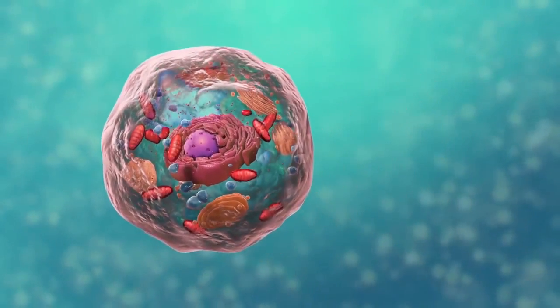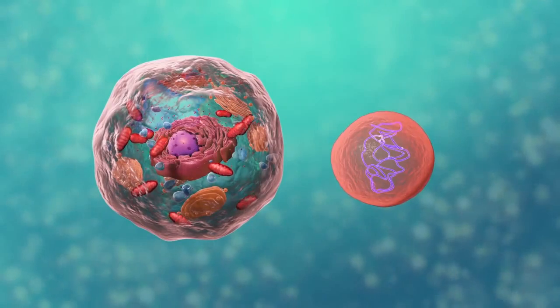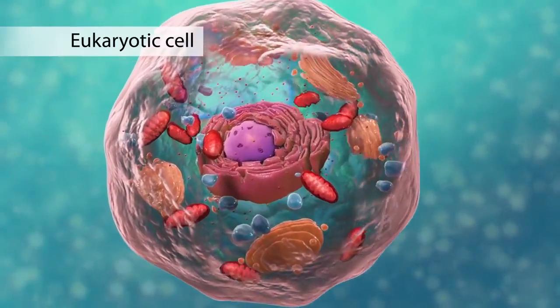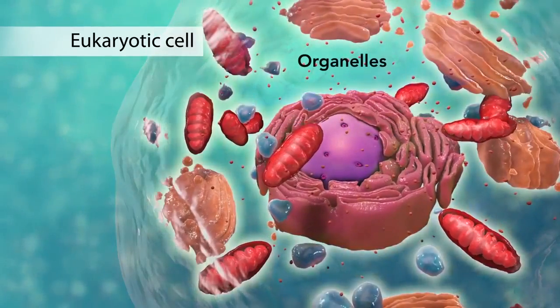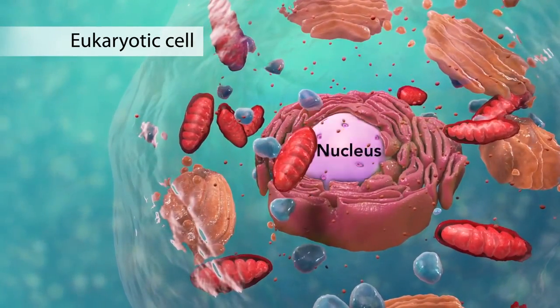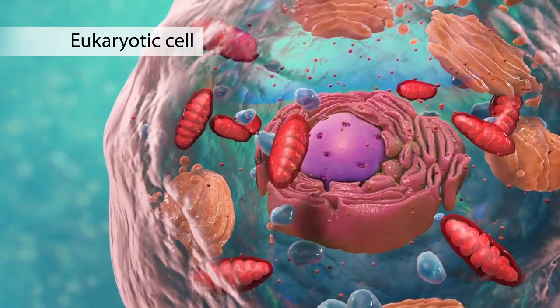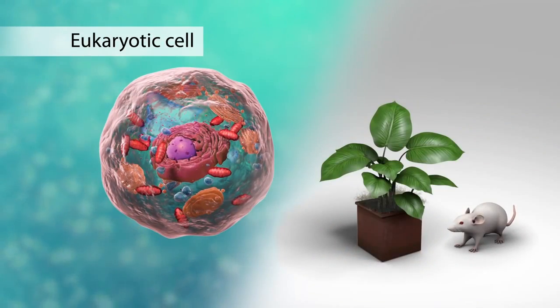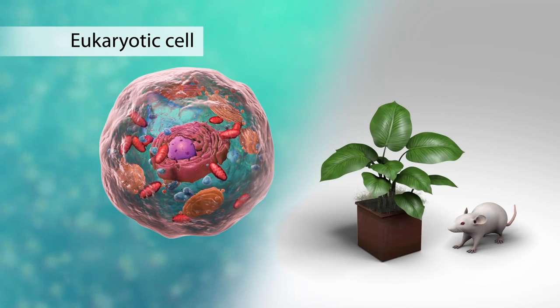There are two broad categories of cells. The first category is eukaryotic cells. They have organelles which include the nucleus and other special parts. Eukaryotic cells are more advanced complex cells such as those found in plants and animals.